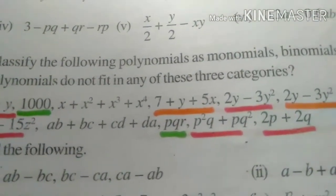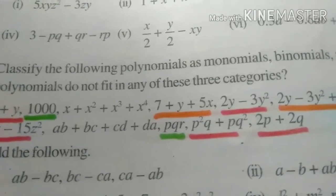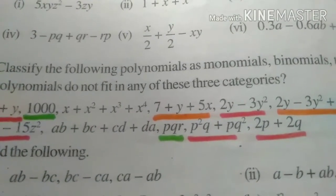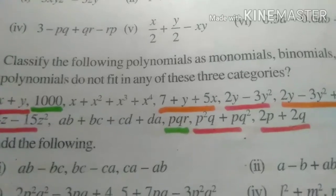they are the trinomials having the three terms. And the remaining terms which are having more than three terms, they do not fall in these three categories and so they are the polynomials.